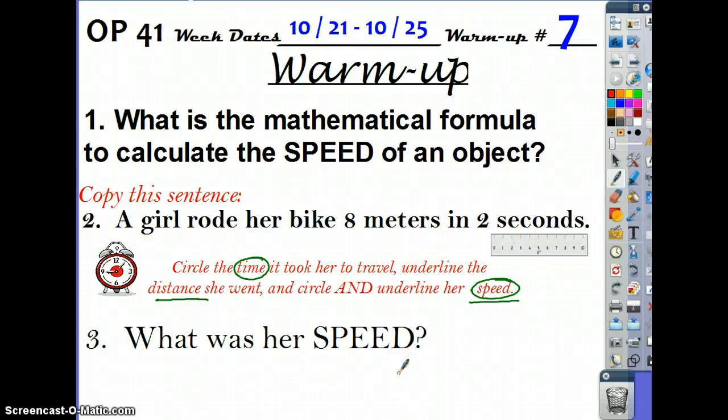Hey guys, here's just a quick review of what we did for our warm-up today. I asked you the question, what was the mathematical formula to calculate the speed of an object? And we talked about today that the speed of an object is calculated by taking the distance and dividing it by the time.